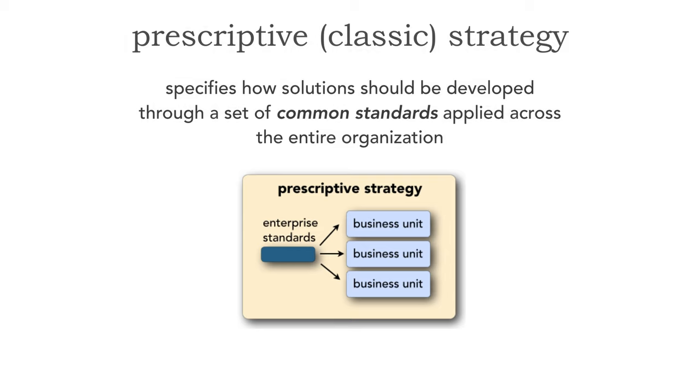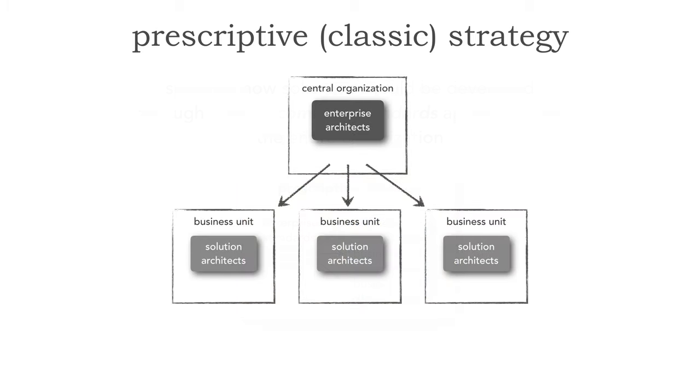The prescriptive or classic strategy of enterprise architecture specifies how solutions are going to be developed through a set of common standards that are applied across the entire organization. We have a central organization, a central governing body of enterprise architects, and that team defines a set of standards. Every business unit and every team within those business units across the company have to apply those same sets of standards.